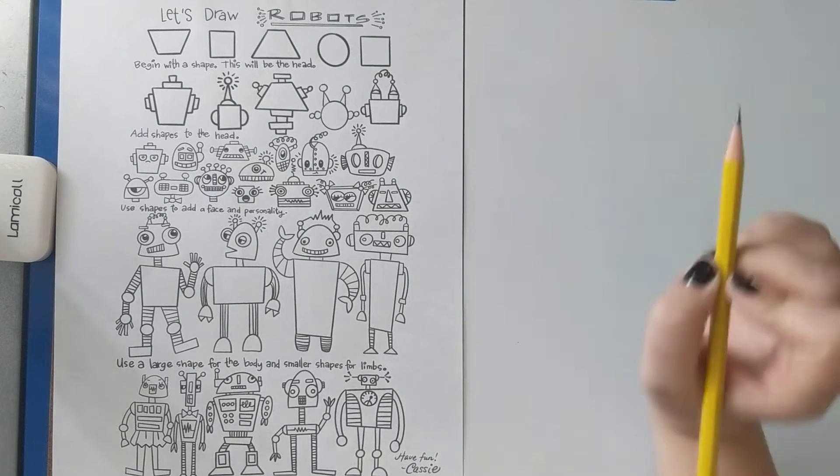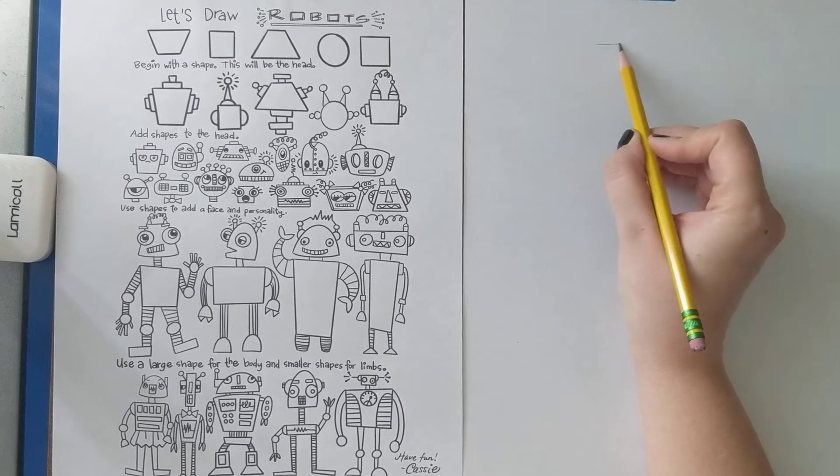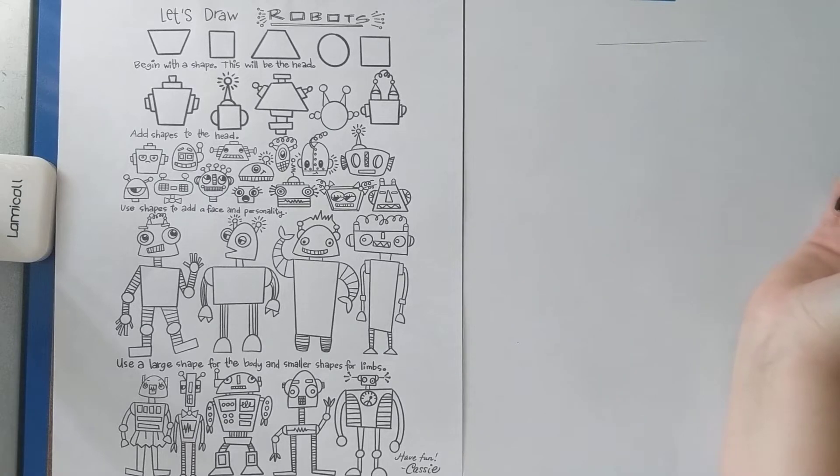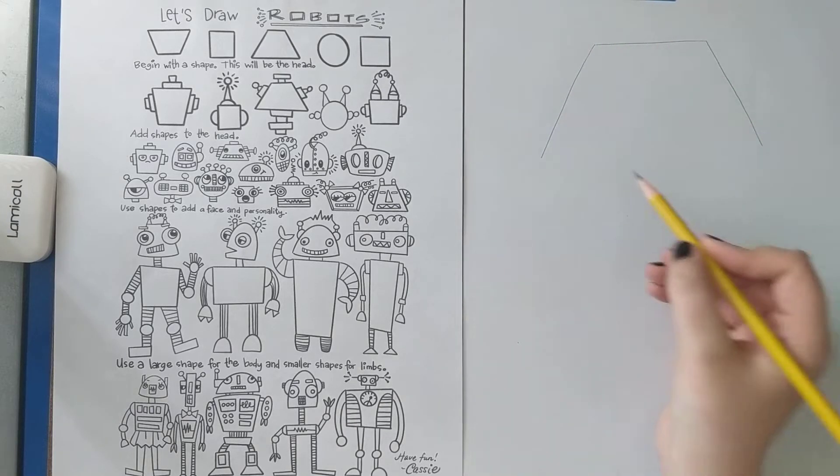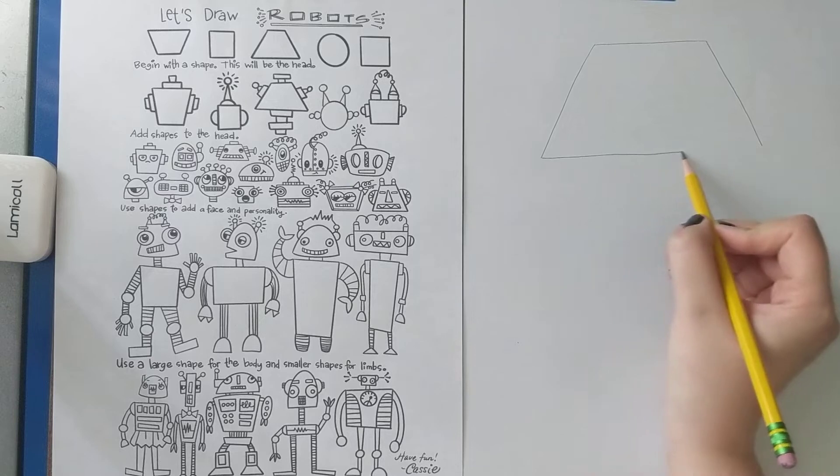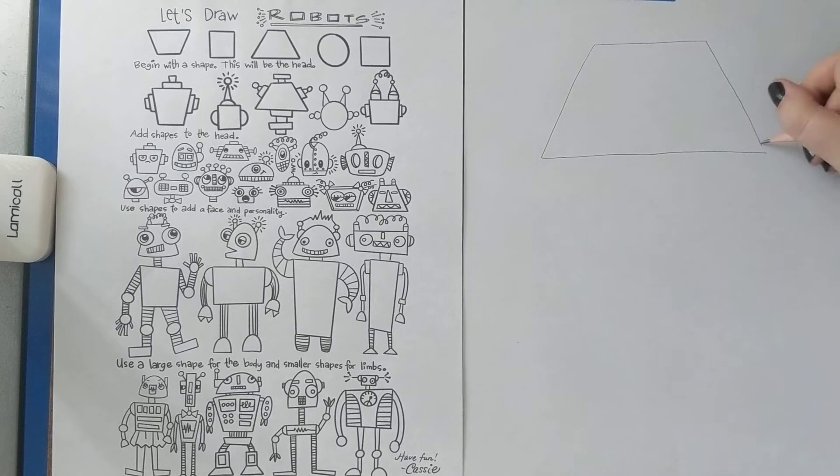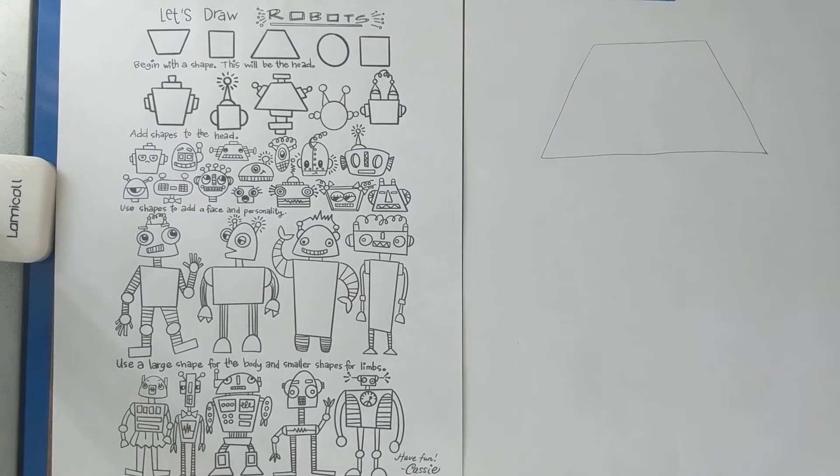So I'm gonna start with my pencil and I'm just gonna draw lightly. I'm gonna draw a little bit darker so that you can see it on the camera. I know sometimes it's hard to see. So mine might be a little darker. You might want to draw it a little lighter in case you make a mistake. So I'm gonna draw my head nice and big, nice and big enough so that later I can add details. Perfect.